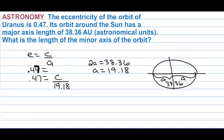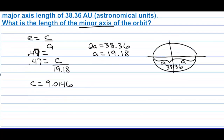Multiplying both sides by 19.18, we get c equals approximately 9.0146. But c is not related to the minor axis — c is the distance from the center to the focus.